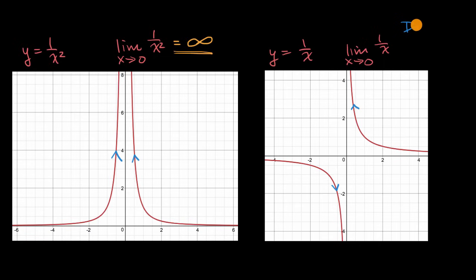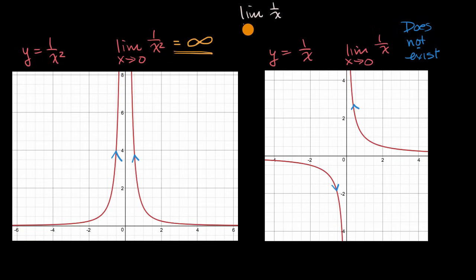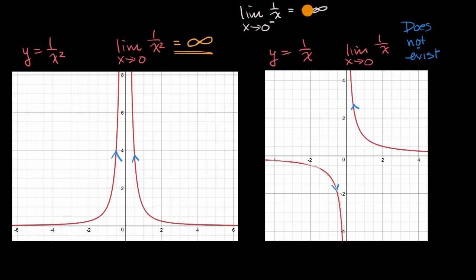So here you still could not say that the limit is approaching infinity, because from the right it's approaching positive infinity but from the left it's approaching negative infinity — so you would say that this limit does not exist. You could use one-sided limits here. The limit of one over x as x approaches zero from the left-hand side is equal to negative infinity.